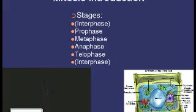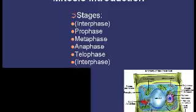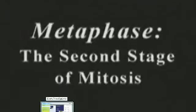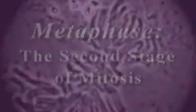So we've covered prophase. Let us continue on to see metaphase. During metaphase, the second stage of mitosis, spindle microtubules attach to the centromeres of the doubled chromosomes. Metaphase ends when all the doubled chromosomes have arranged themselves on the equator of the spindle.